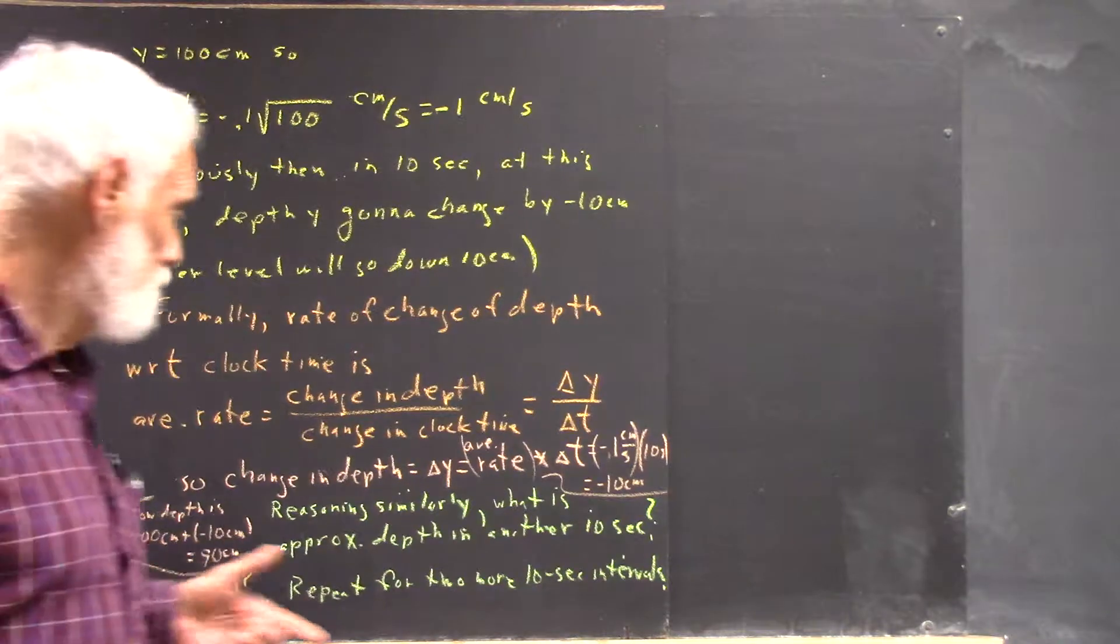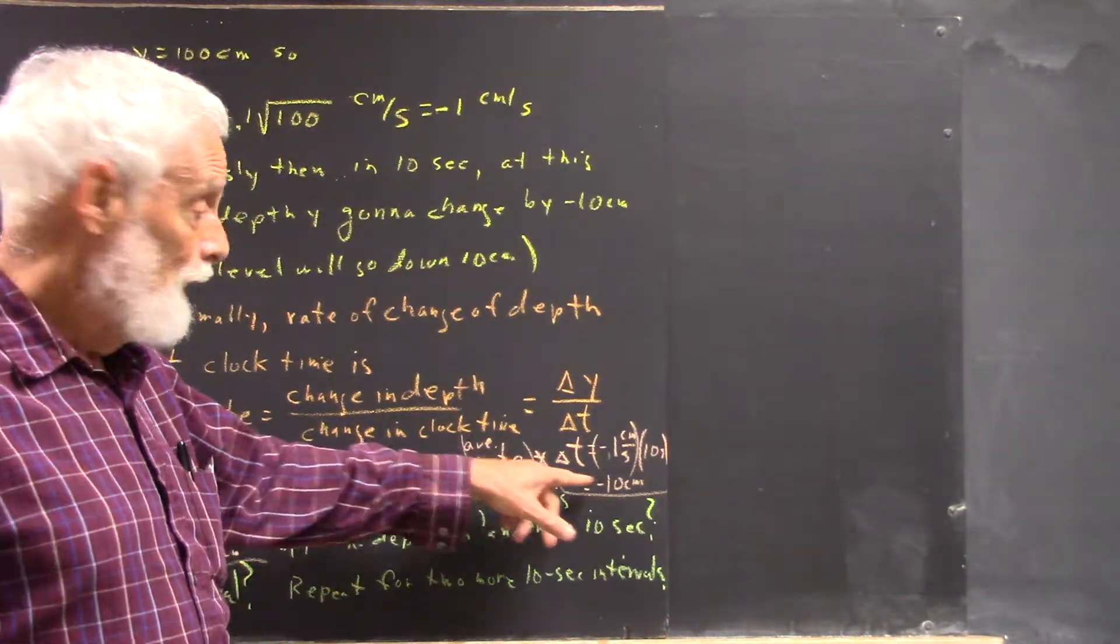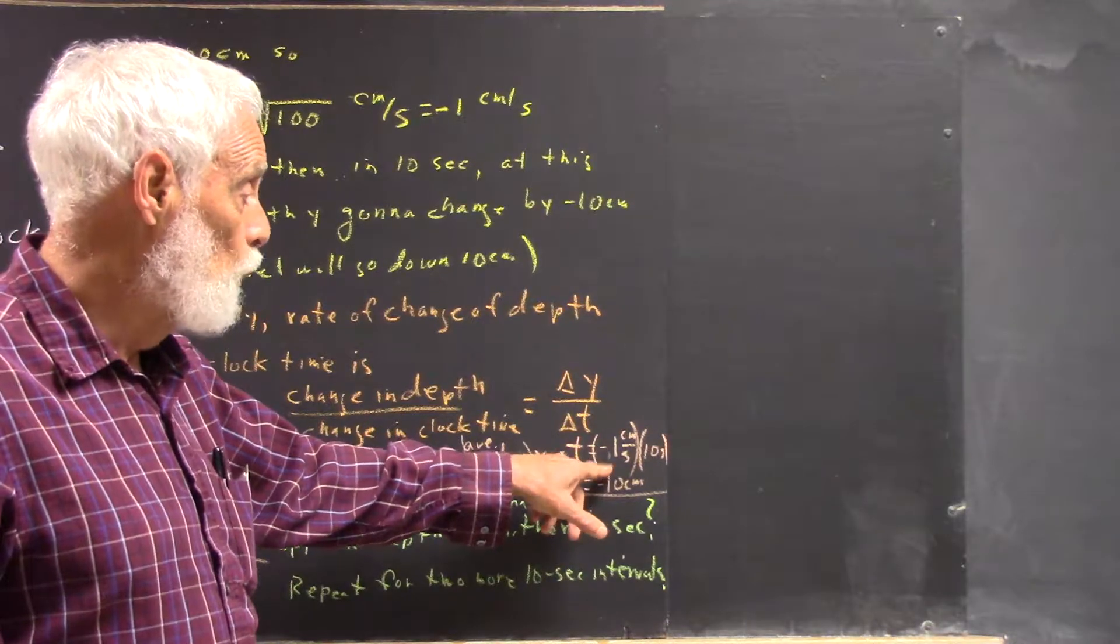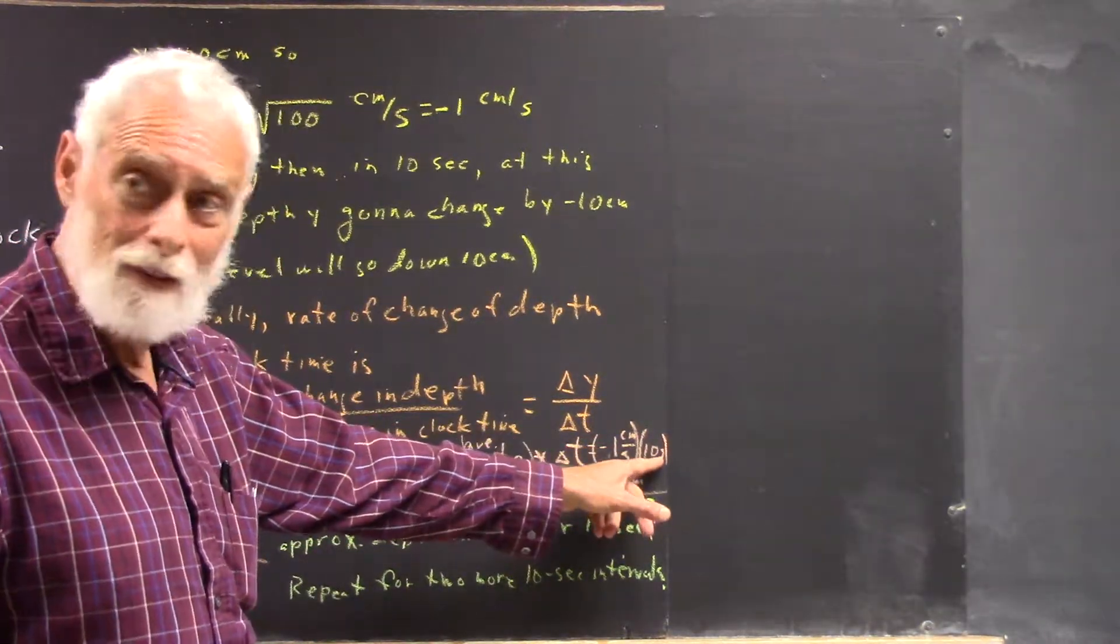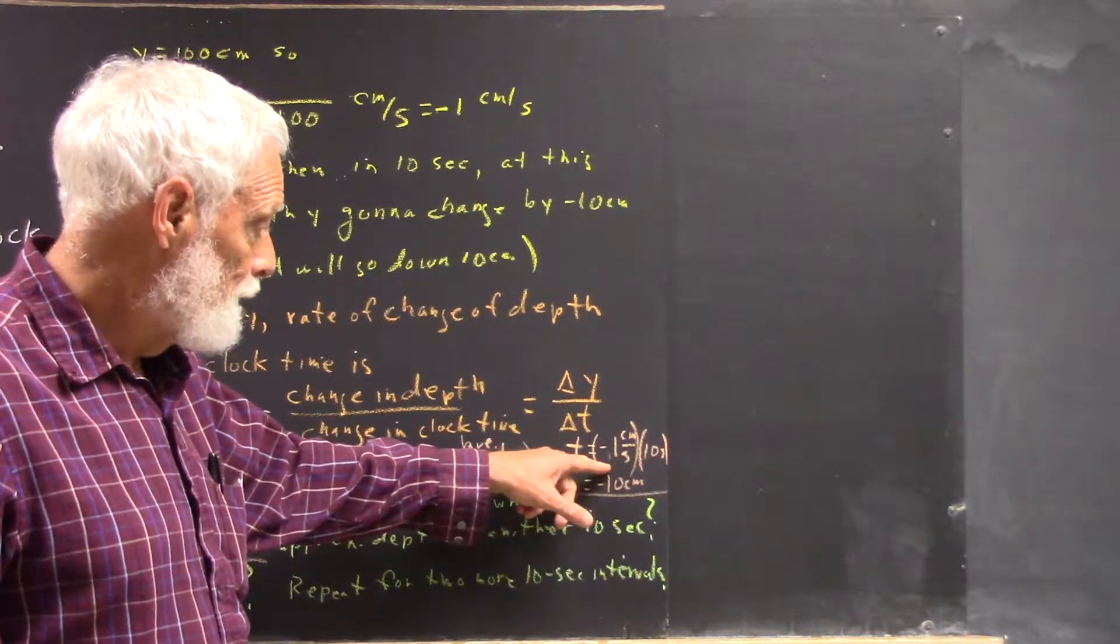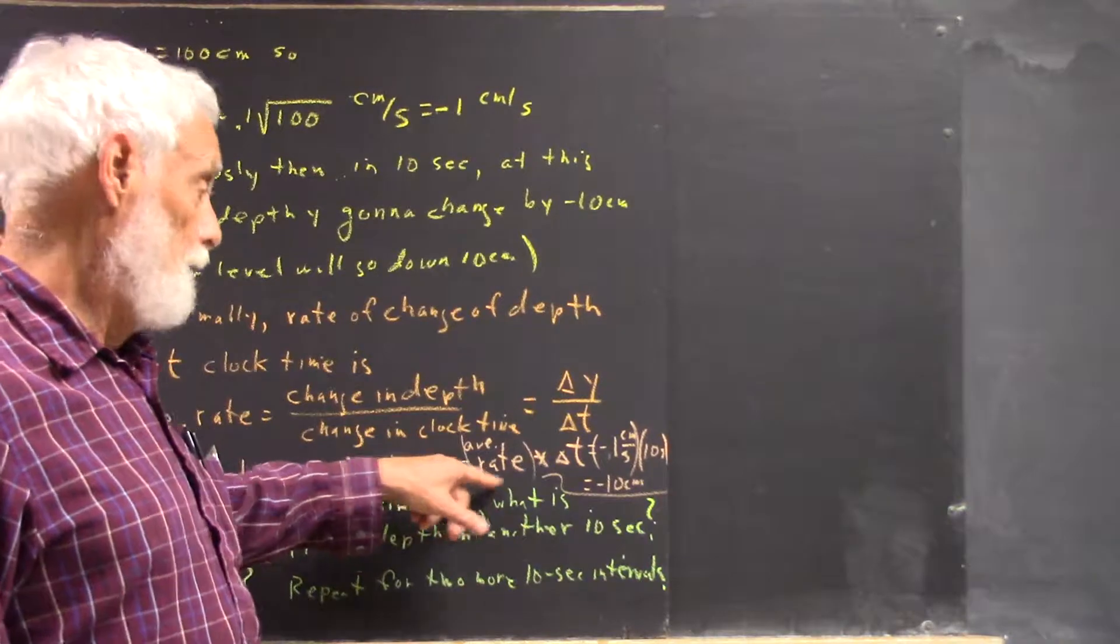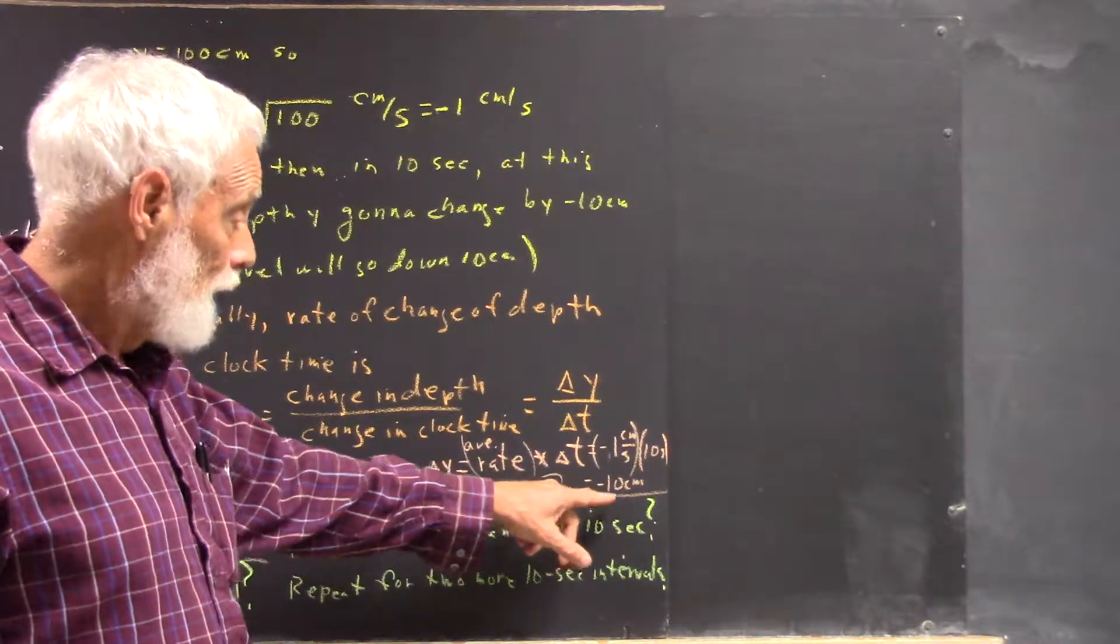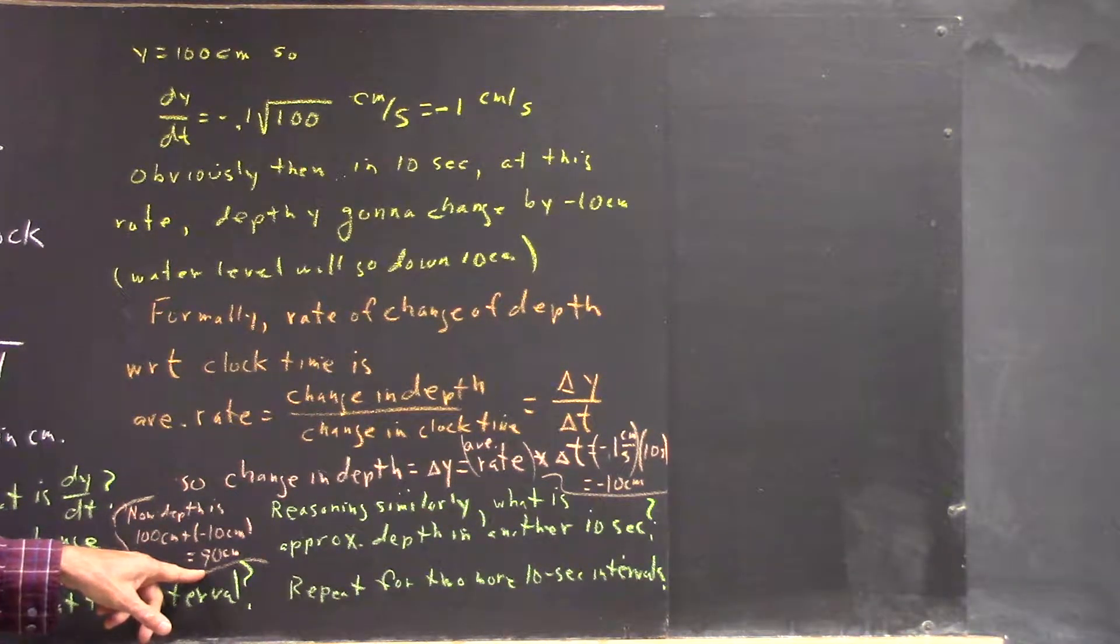Okay, when we do the average rate times delta T, the average rate is negative 1 centimeter per second times the 10 seconds. That S is kind of badly written there, but it's negative 1 centimeter per second times 10 seconds, because you do the average rate times delta T. That's negative 10 centimeters, which we then add to the original depth to get 90 centimeters, right?